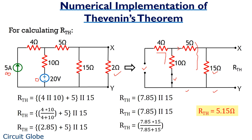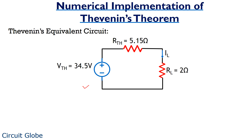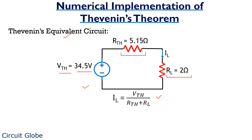Now as we have got the values of Vth and Rth, let's draw Thevenin's equivalent circuit. This is our Thevenin's equivalent circuit comprising of Thevenin's equivalent voltage of 34.5 volts and Thevenin's equivalent resistance of 5.15 ohms, connected in series with a load resistance of 2 ohms. Now we can easily find the current through this load resistance RL using the formula: IL equals Vth upon Rth plus RL. On substituting the values, we get IL equal to 4.82 amperes.